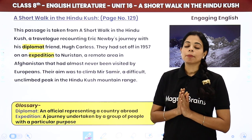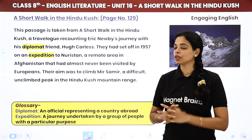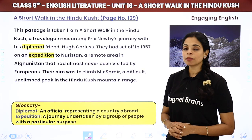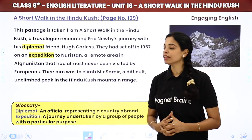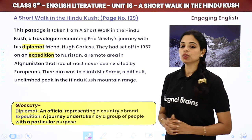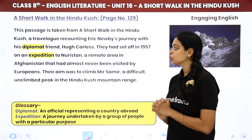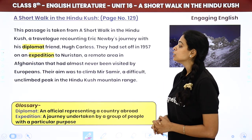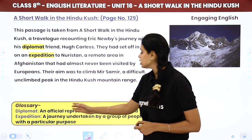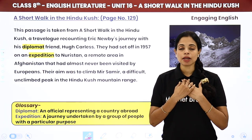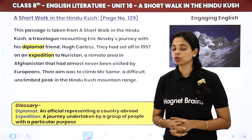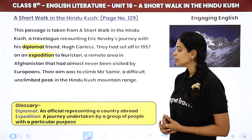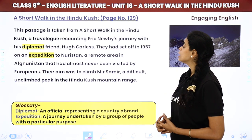Now we are going to start. But before that, here is some background about the story. This passage is taken from 'A Short Walk in the Hindu Kush,' a travelogue recounting Eric Newby's journey with his diplomat friend Hugh Carles. 'Diplomat' means an official representing a country abroad — for example, if I am in India and I represent a country in the US, then I am a diplomat. They set off in 1957 on an expedition to Nuristan, a remote area in Afghanistan that had almost never been visited by Europeans.